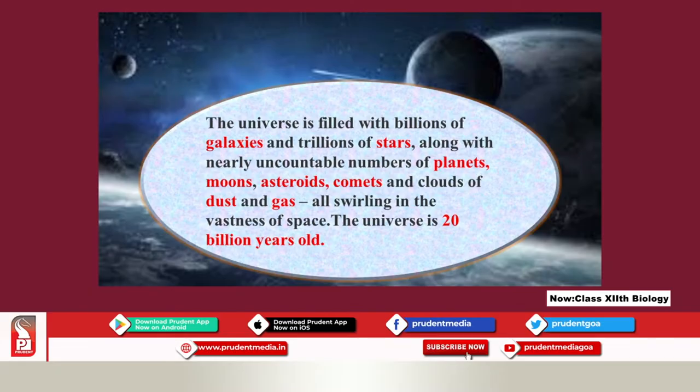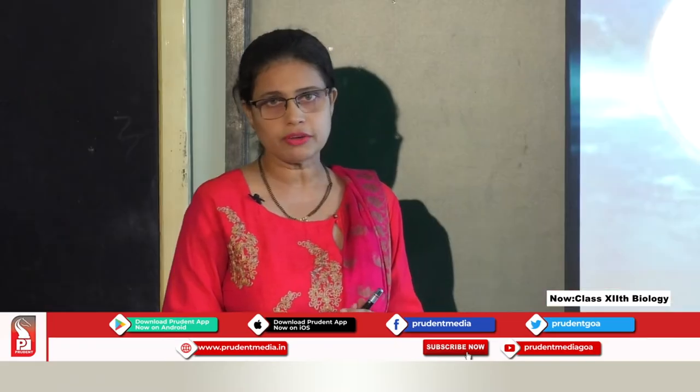The universe is filled with billions of galaxies, trillions of stars, along with an uncountable number of planets, moons, asteroids, comets, clouds and dust — all spinning and swirling in the vast space. And how old is the universe? It is almost 20 billion years old — very, very old.